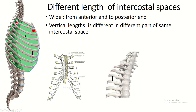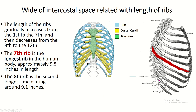A single intercostal space has width from anterior to posterior, and there is a vertical length. The vertical length is different in different parts of the same intercostal space. In front it is narrower than the rest of the intercostal space — you can see here the vertical diameter is less, but here the vertical diameter is a little bit longer. The width of the intercostal space is related to the length of the rib.